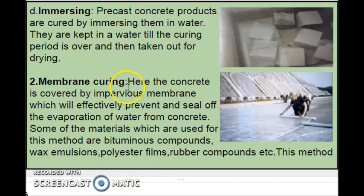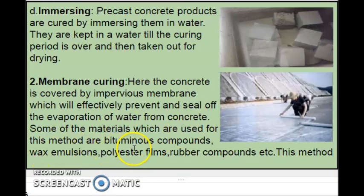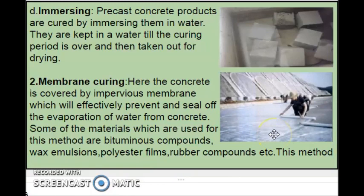The second main method is membrane curing. Here the concrete is covered by an impervious membrane which effectively prevents and seals the evaporation of water from the concrete. Some materials used for this method are bituminous compounds, wax emulsions, polyester films, rubber compounds, etc. The concrete surface is sealed off using these materials so that water will not evaporate. This method is used where there is a scarcity of water, but it is not as efficient as water curing.